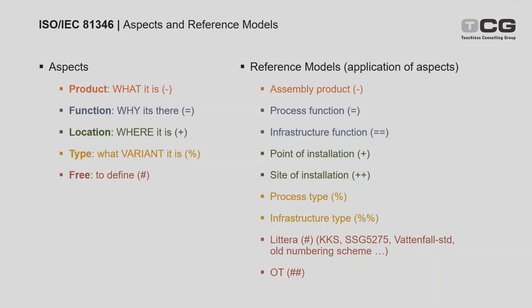One object might be expressed with up to eight or ten different reference models, all equally valid. Most objects are not represented in all structures, because it doesn't always make sense — a door in a room has no purpose being expressed in a process function structure, for example.